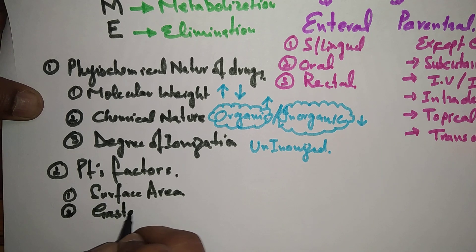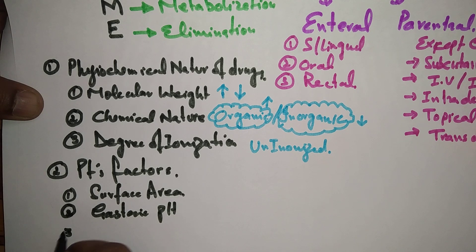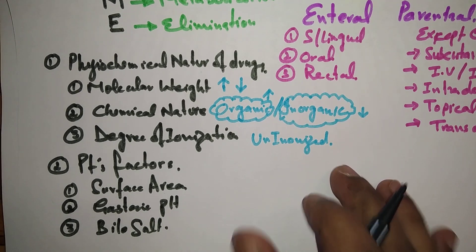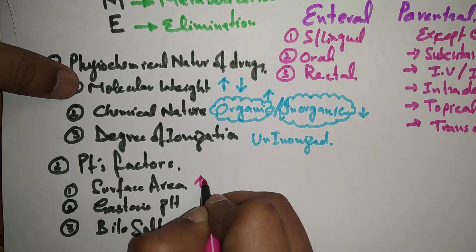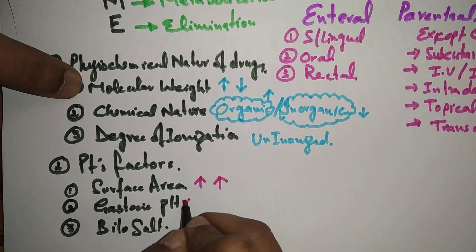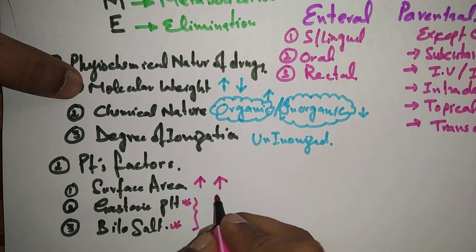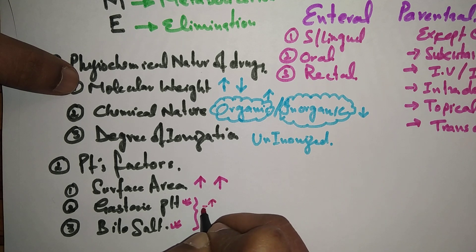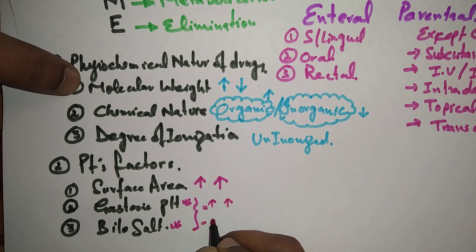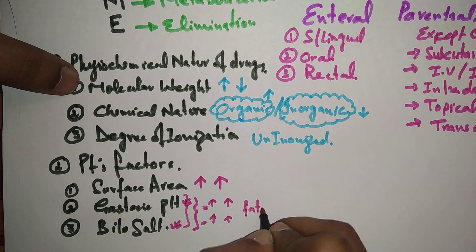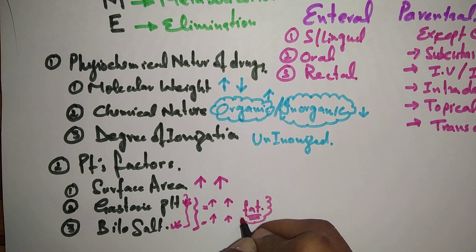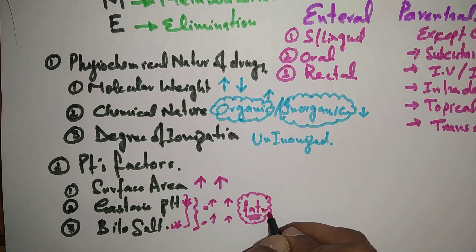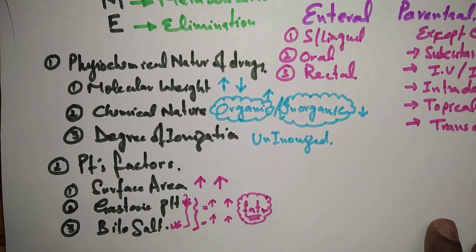In patient's factors, number one we have surface area for absorption, number two we have gastric pH, and number three we have bile salts. These two — gastric pH and bile salts — are almost the same in effect. If the gastric pH is a little bit higher and bile salts are more, there will be more absorption, because these two things help with fats and allow drugs to be metabolized more easily, resulting in more absorption.